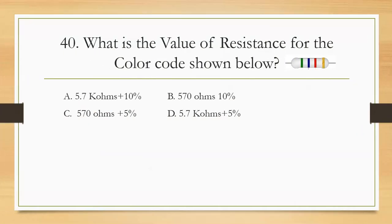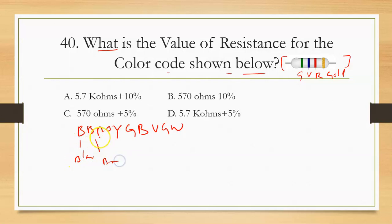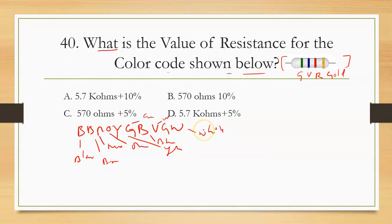The last question of this session: what is the value of resistance of the color code shown below? The colors are green, violet, red, and gold. The color code standard mnemonic is: BB Roy of Great Britain of Very Good Wife — Black, Brown, Red, Orange, Yellow, Green, Blue, Violet, White. So: black=0, brown=1, red=2, orange=3, yellow=4, green=5, blue=6, violet=7, white=8.